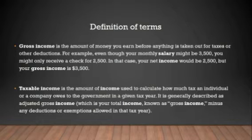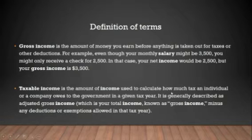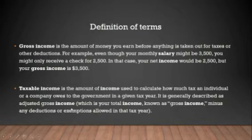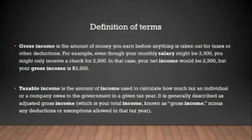Net income is the term used when all required deductions have already been made — so in that case, the net income would be $2,500 while the gross income is $3,500. As for taxable income, it is the amount of income used to calculate how much tax an individual or company owes to the government. Some income is taxable when the salary falls within the taxable income range, while minimum wage earners may not be taxed.